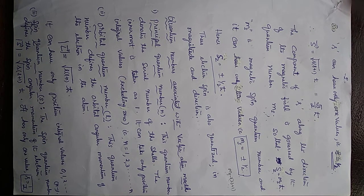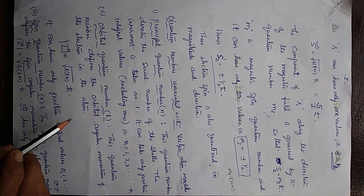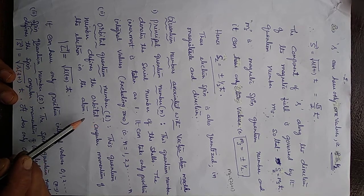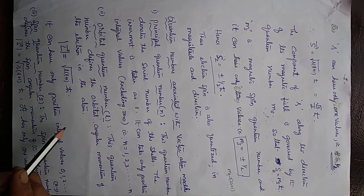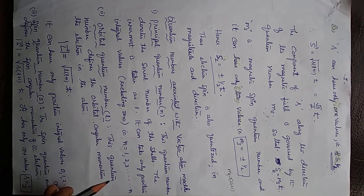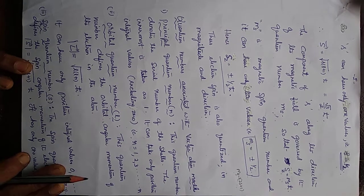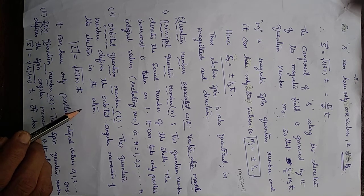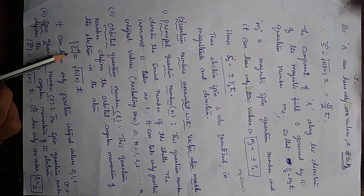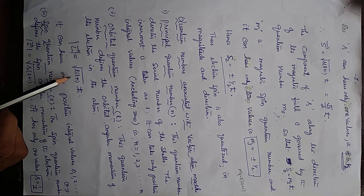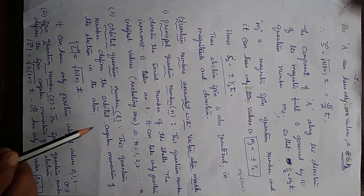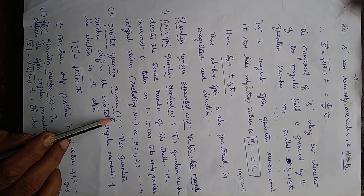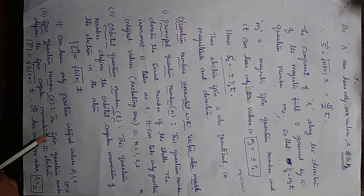The next quantum number is the orbital quantum number L, which represents the orbital motion of electrons and indicates the sub-shells or sub-levels of the main shells. The angular momentum of the electron is quantized and its magnitude is given by the square root of L(L+1) times h-bar. L can have N values, from 0 to N minus 1.